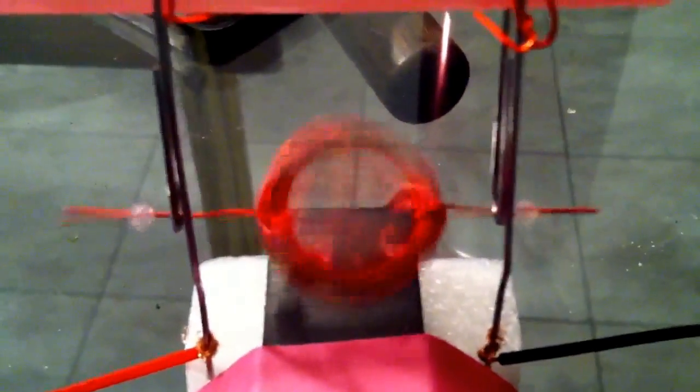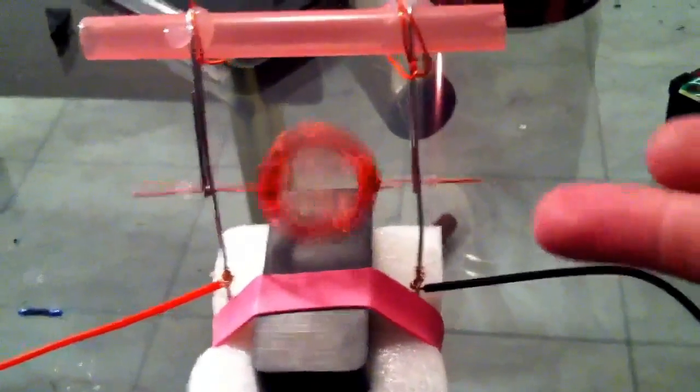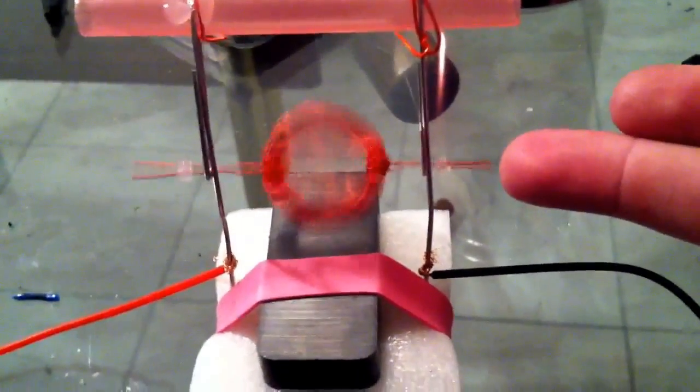And I have a coil of wire, copper wire, that has about, I'd say about 25 loops. And basically, this would be your armature of the motor, this little copper coil.